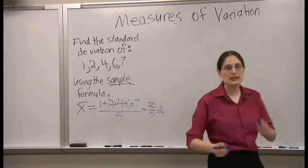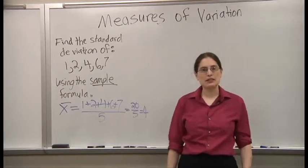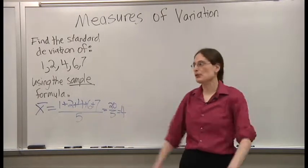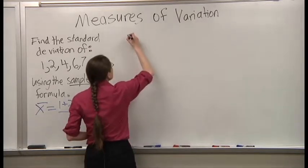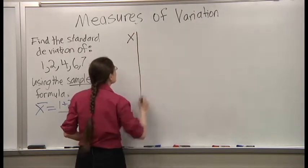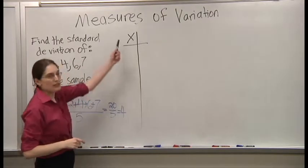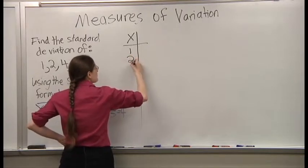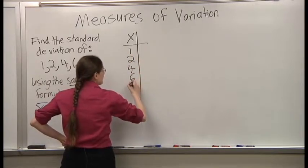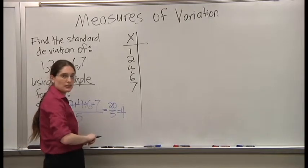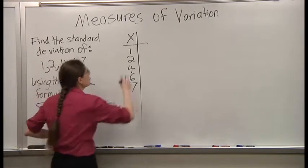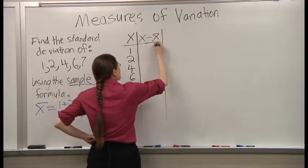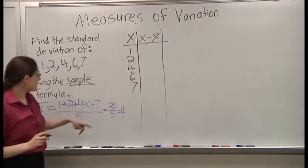What do we do next? What's the next step to finding a standard deviation? Yes, that great big table with your data written in the first column. In the next column, you do X minus the mean. The mean is 4.